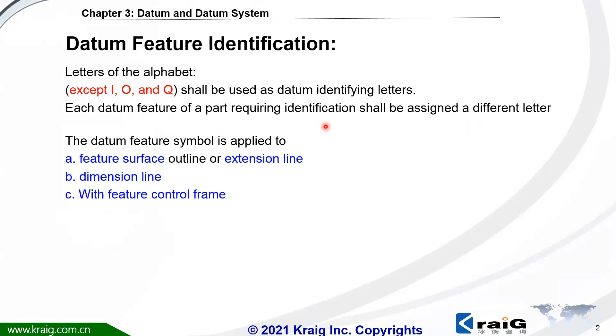Before we mention that, we know we can use any letter of the alphabet to specify the data except three. I, O, or Q shouldn't be used as data letters. How to specify the data properly is very important. This is going to tell the joint user which feature should be the datum without misunderstanding. There's a couple of ways for us to specify the data properly.